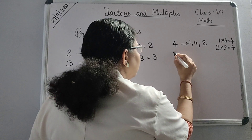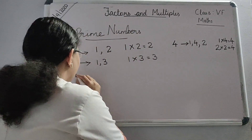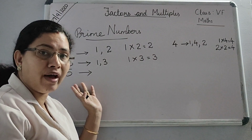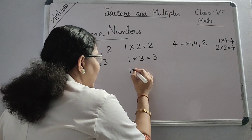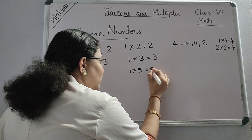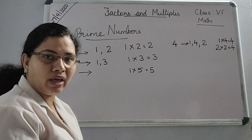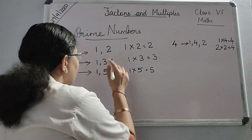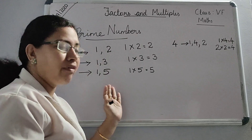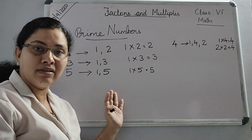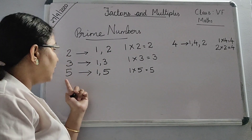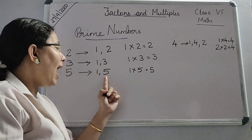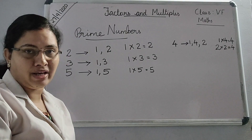I am going to take 5. What are the factors of 5? 1 into 5 is equal to 5. Any other factor? No — only these 2 factors. What is the speciality of these 2 factors? Whatever the number, only that number and 1 are the factors of that number.